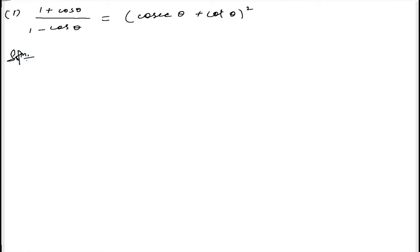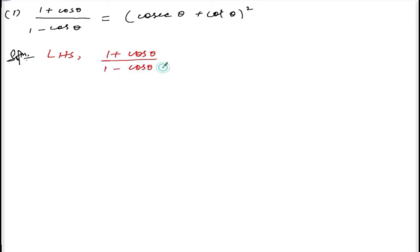So, how to solve this question? Let us take the left hand side. Left hand side is 1 plus cos theta divided by 1 minus cos theta. We need to convert in terms of cosec and cot, and there is a square. So, what we are going to do is multiply by 1 plus cos theta, to the numerator as well as denominator.